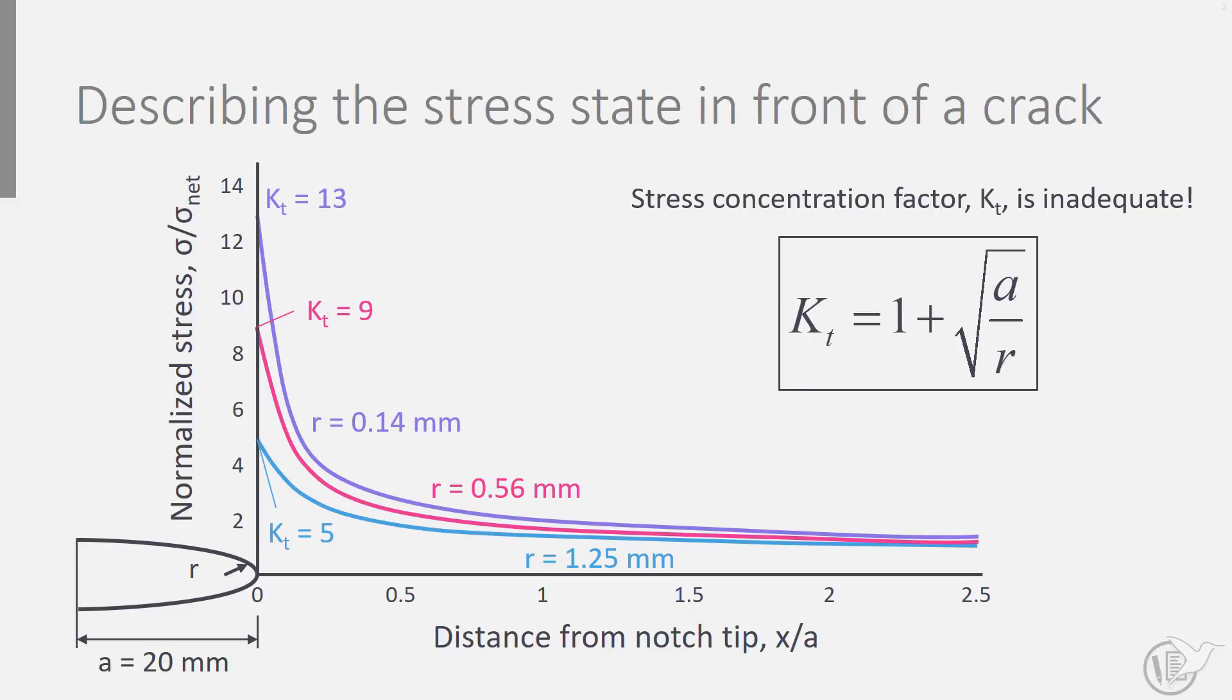With fatigue cracks, the crack tip is generally sharp, equivalent to a notch root radius of approximately zero. Hence, KT becomes infinite, indifferent of the crack length.